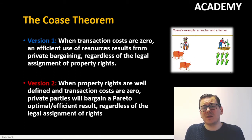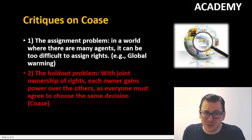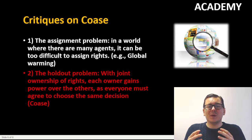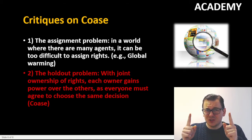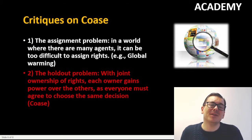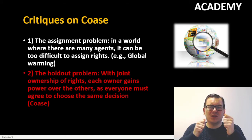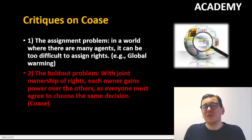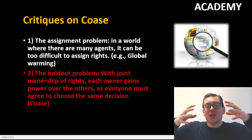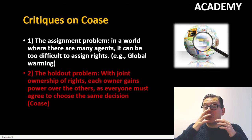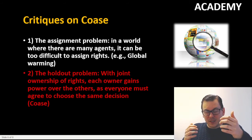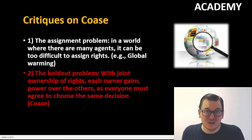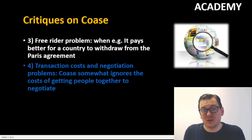Of course this theorem has met critique points. One is the assignment problem: in a world where there are many agents and not just two as in the case, it can be difficult to assign the right to one or the other — an example here could be global warming. Another is the hold-up problem: if we have joint ownership or rights, we might tend to put ourselves in a situation where we hold up the other party, which does not lead to a rate-optimal result.